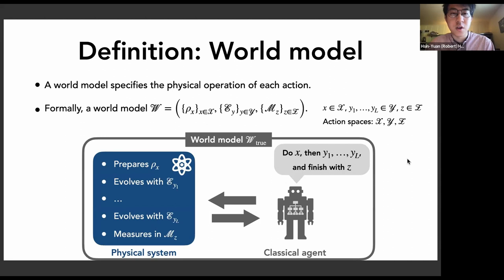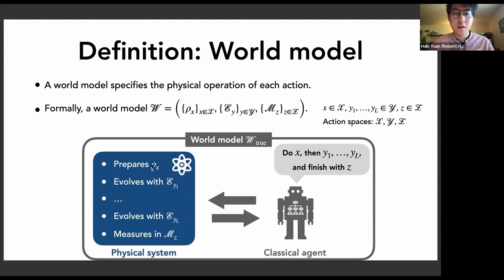To better understand that question, we provide a few more definitions. The first is what we call a world model — a description that encompasses the interaction between the classical agent and the physical system. More precisely, it defines how actions map to actual physical operations. The classical agent specifies an action like x, y, z, which corresponds to some physical operation: rho_x for state preparation, E_y for evolution, and M_z for measurement.